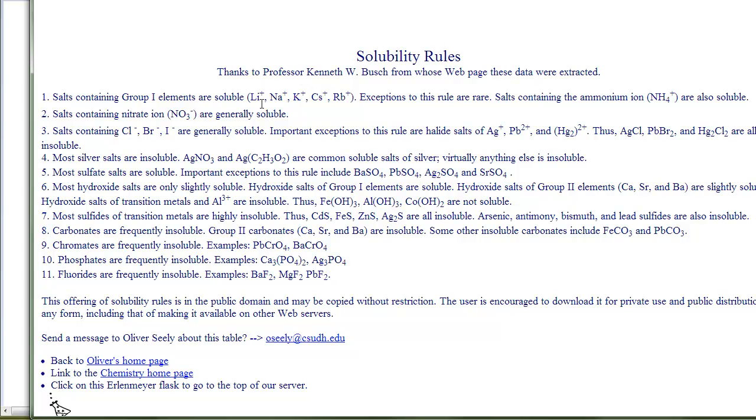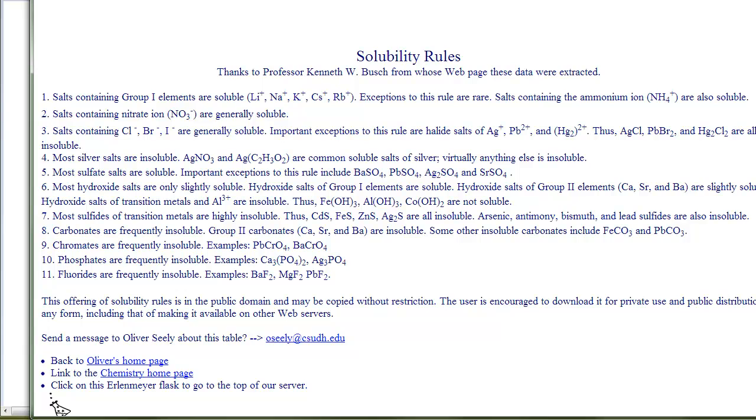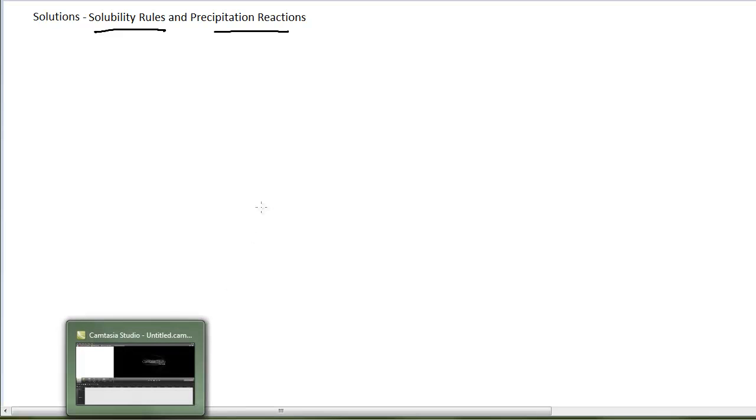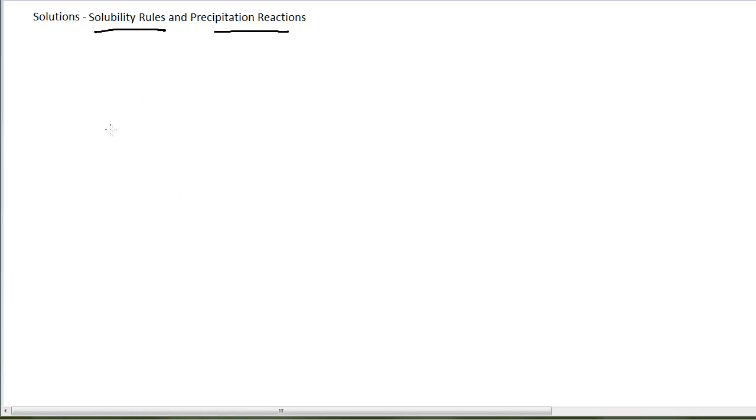So you need to become familiar with the solubility rules tables. Again, there's one in your textbook. And you need to be able to use that table to predict whether or not ionic compounds will be soluble or insoluble. I'm going to assume that you can go look at the table as we're doing this example. And so you can, with me, predict whether or not something would be soluble or insoluble. So for this particular reaction, we're going to look at the reaction between calcium nitrate and ammonium phosphate.